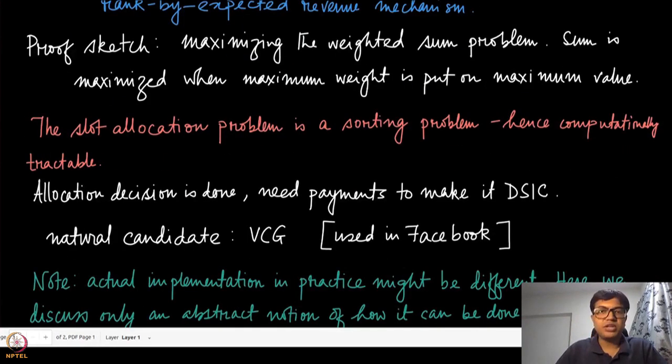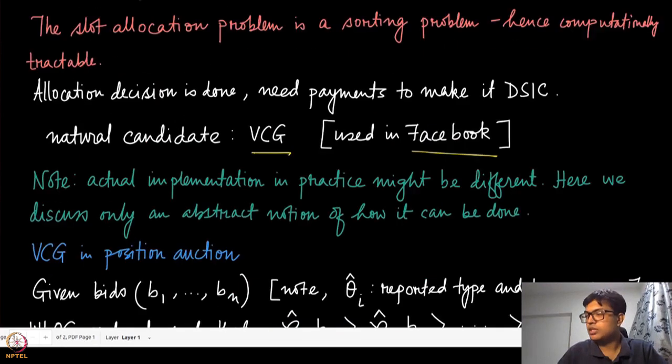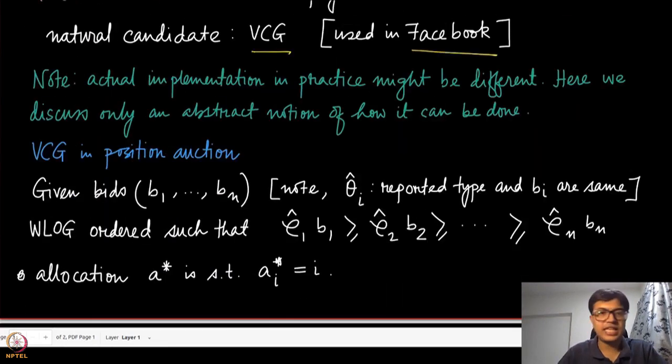Because this is a sorting problem, it's already computationally tractable. Now the allocation decision is done; we need the payments to make it DSIC. And quite naturally, because the allocation is efficient, the natural candidate is going to be the VCG mechanism. This is something which is used in designing the ad auctions on Facebook.